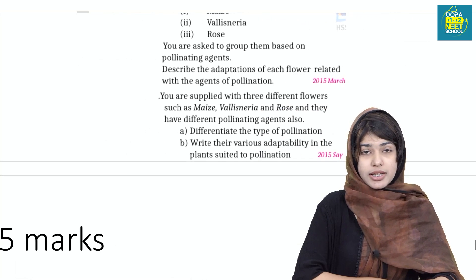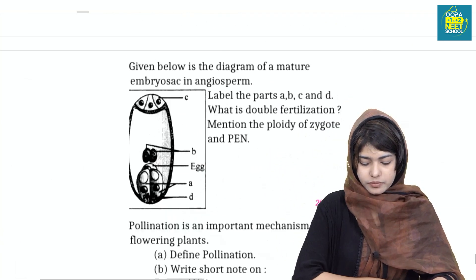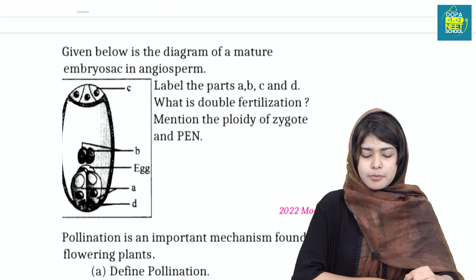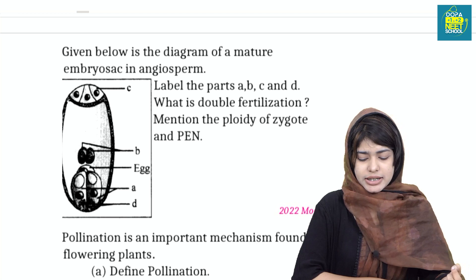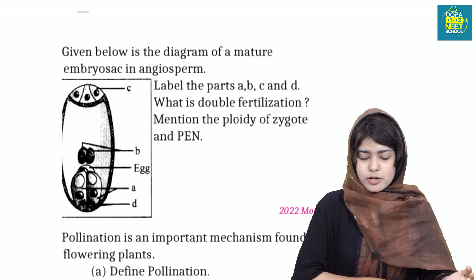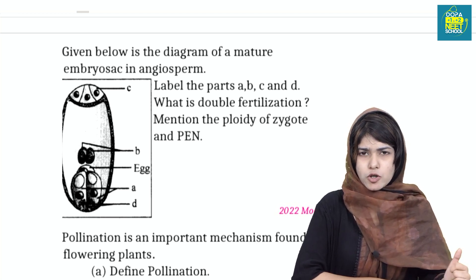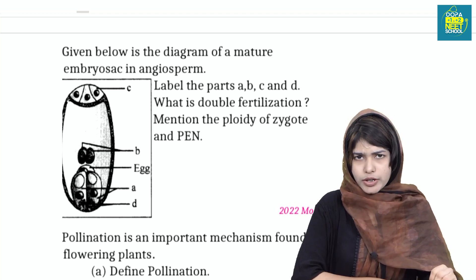We have five more questions. Given below is the diagram of a mature embryo sac in an angiosperm; you are asked to label parts A, B, C, and D. What is double fertilization? What is zygote ploidy? What is the primary endosperm nucleus?